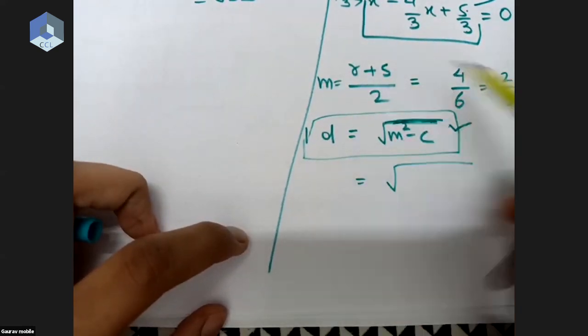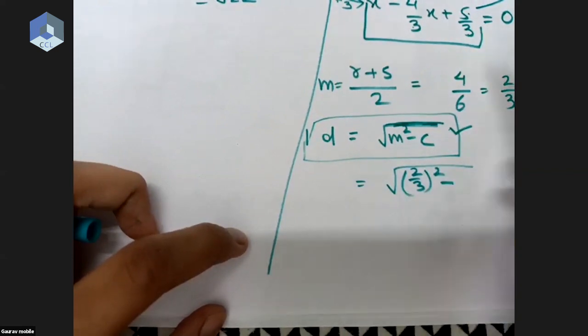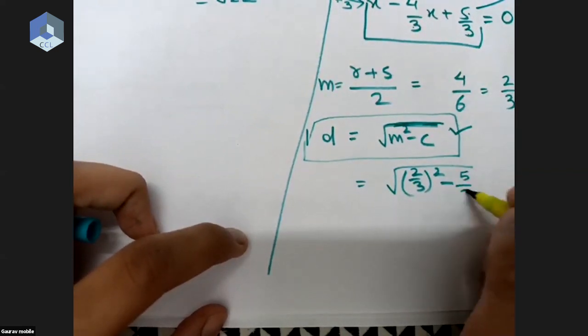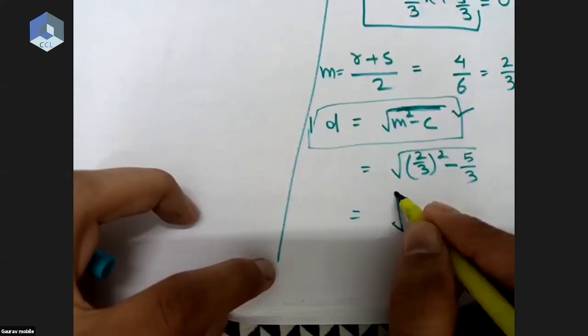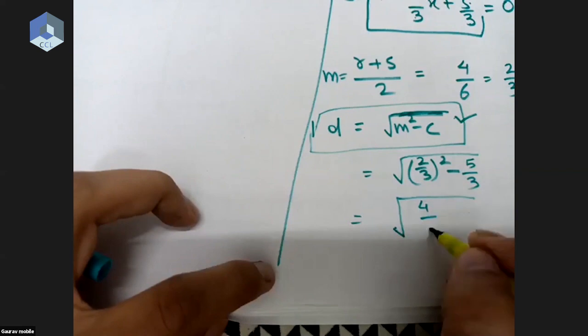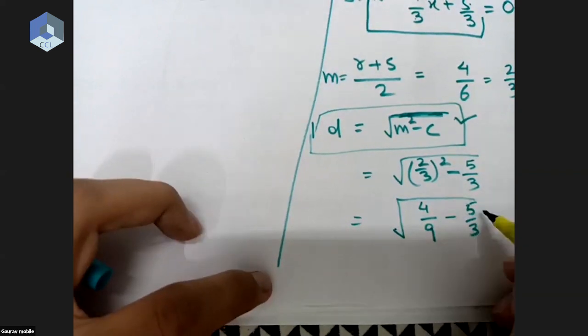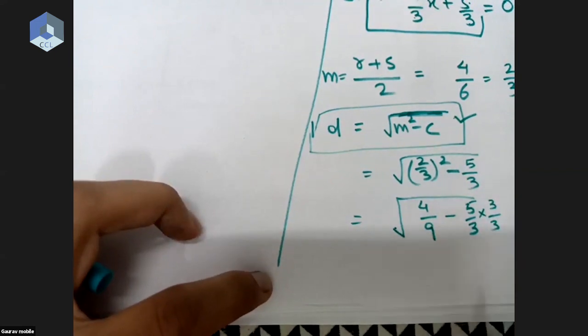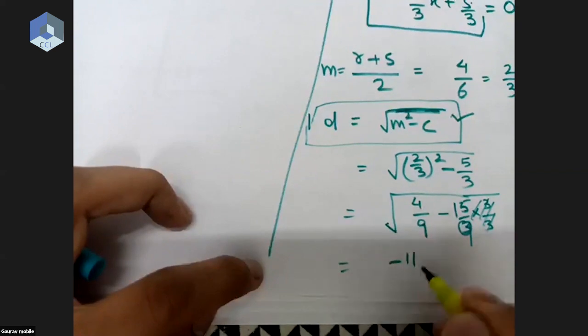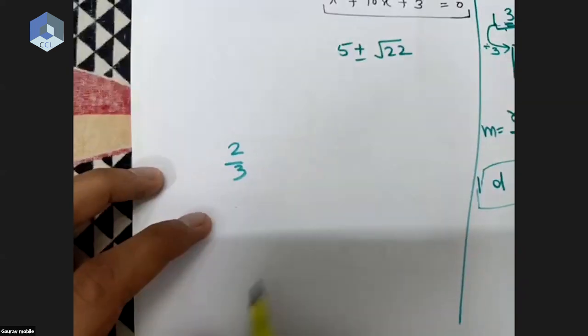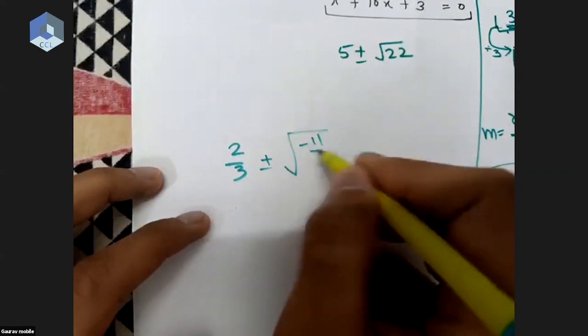So m is two by three, and d is square root of m square minus c, which is 5 by 3. This gives square root of 4 divided by 9 minus 5 divided by 3, which is square root of minus 11 by 9. So roots are 2 by 3 plus minus under root minus 11 by 9, which means that they are not real.